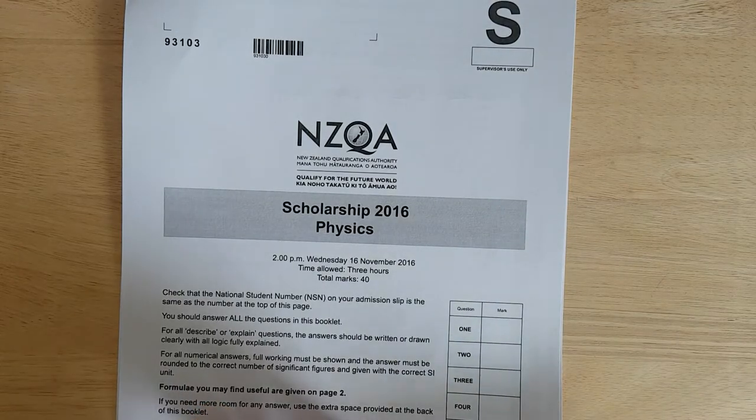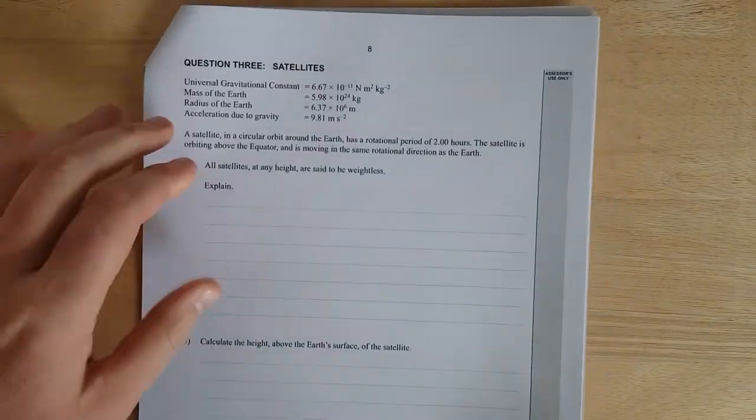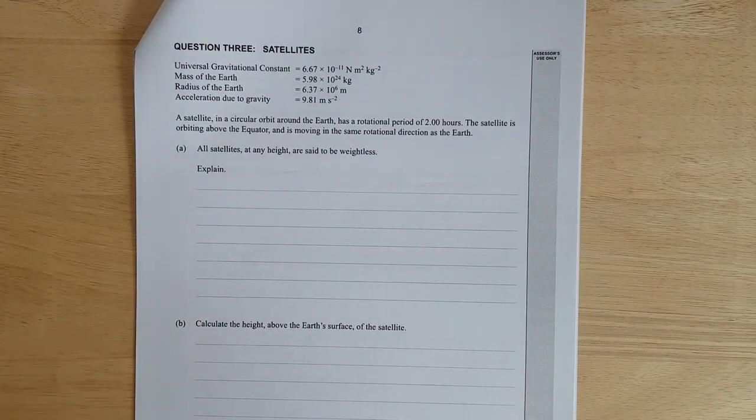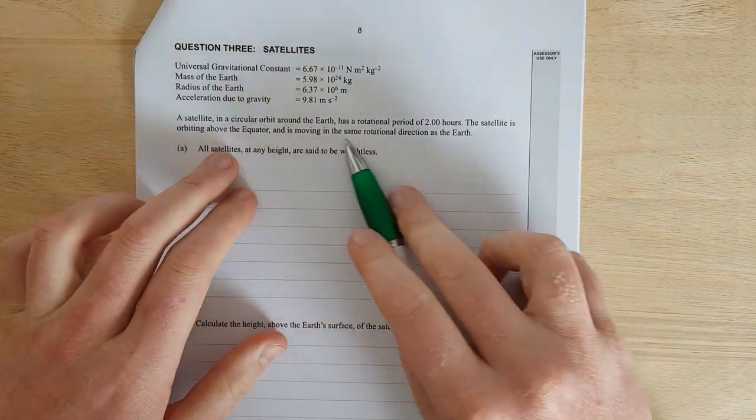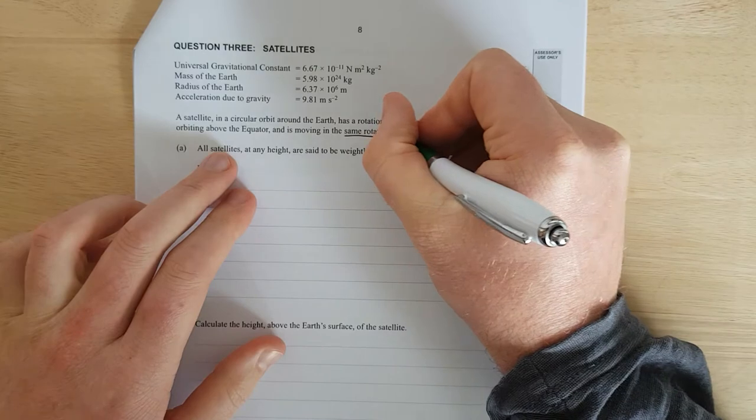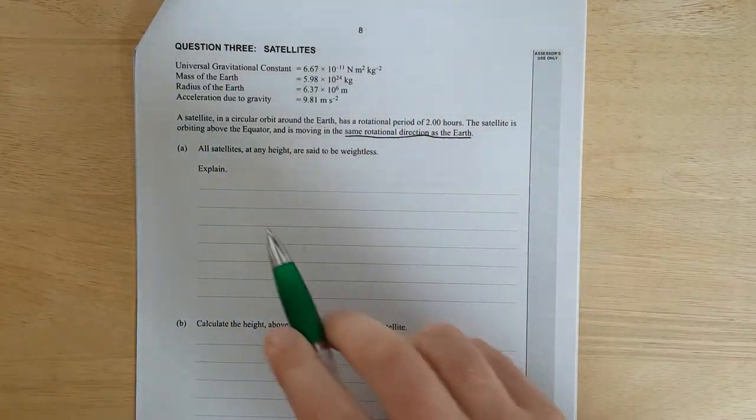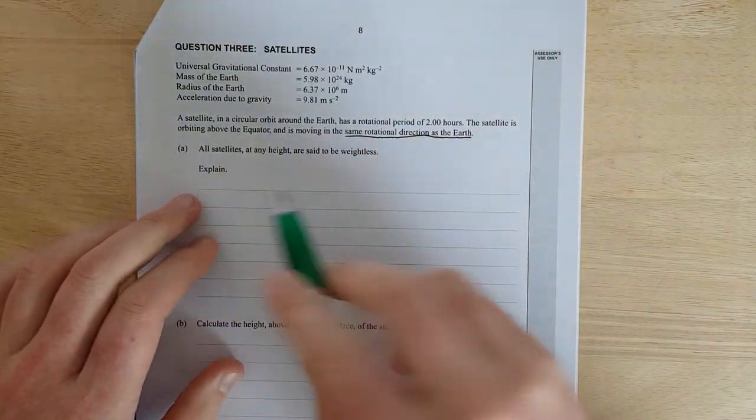This is question 3 of the 2016 scholarship physics exam. A satellite in circular orbit above the Earth has a rotational period of 2 hours. A satellite is orbiting above the Earth and is moving in the same rotational direction. I'll just quickly chuck a line under that. All satellites at any height are said to be weightless. Explain.